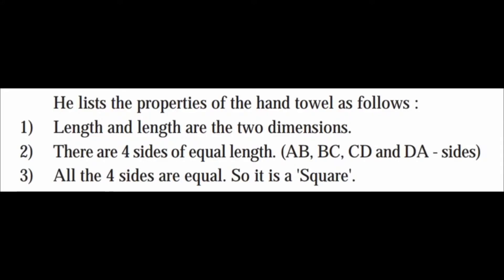He lists the properties of the hand towel as follows. First, length and length are the two dimensions. Second, there are 4 sides of equal length: AB, BC, CD, and DA. Third, all 4 sides are equal, so it is a square. In a rectangle, opposite sides are equal, but in a square, all sides are equal.